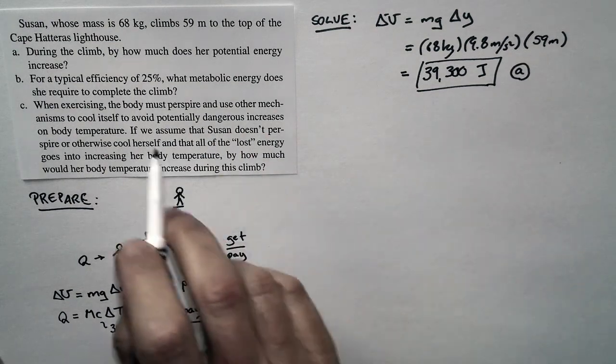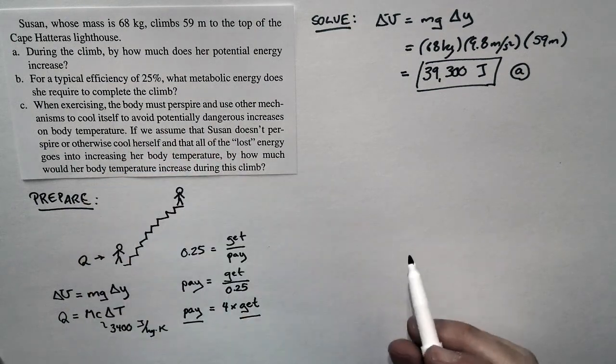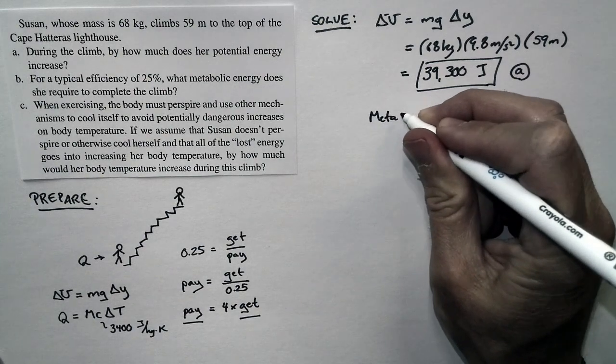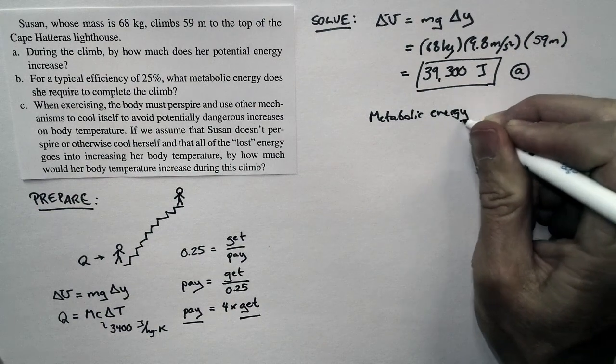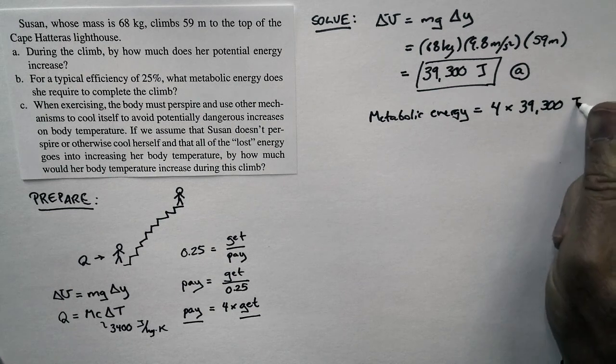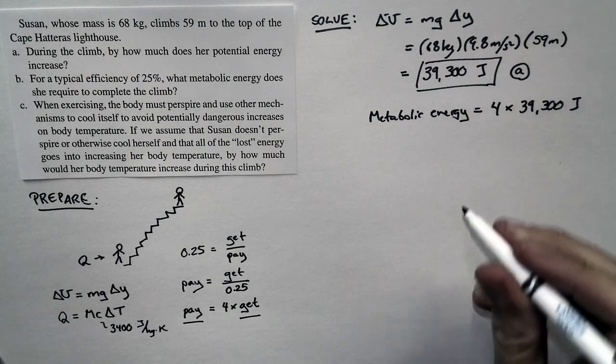Now I'm going to do part B. If her efficiency is 25%, what metabolic energy does she require to complete the climb? The metabolic energy is just four times this number. So it's just four times 39,300 because we've assumed an efficiency of 25%.